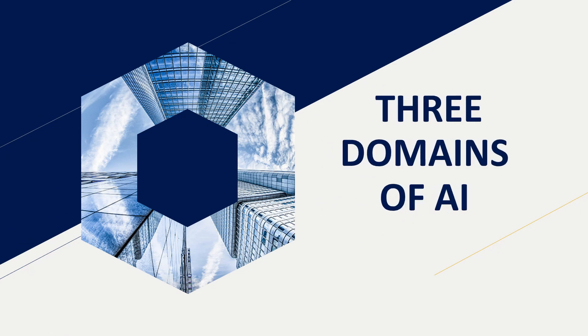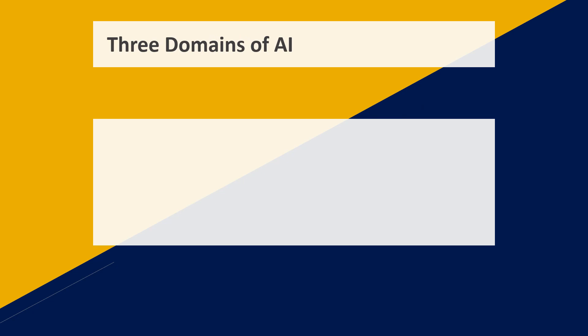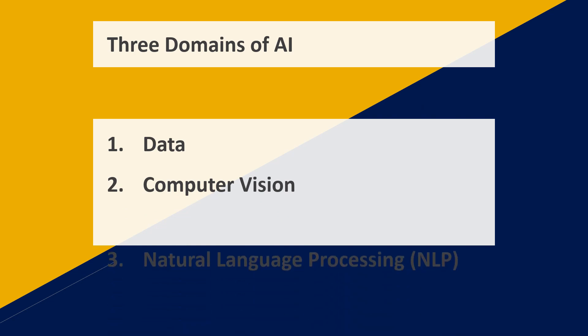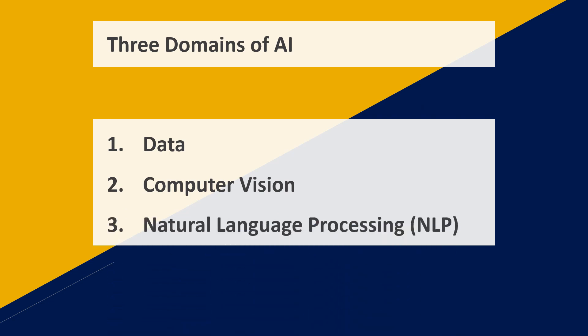In this session, let us learn the three domains of Artificial Intelligence and understand how to play the games that are associated with each of these domains. The three domains of Artificial Intelligence are Data, Computer Vision, and Natural Language Processing.